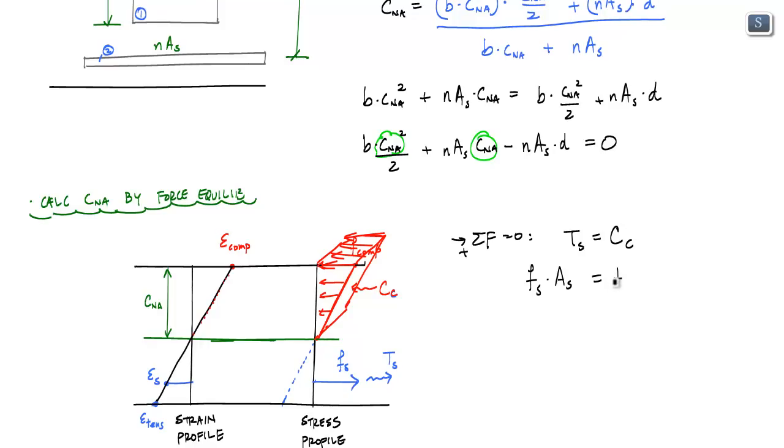And here, that would just be one-half times the base, which I will call CNA. This width right here was F comp times the distance is extruded, which here, this distance would have been B. And so now, I have this equation in terms of stresses, and then I can even substitute once again based on Hooke's law. I can go back to strains, and I can say this was ES times epsilon S times AS is equal to one-half EC times epsilon compression times B times CNA.